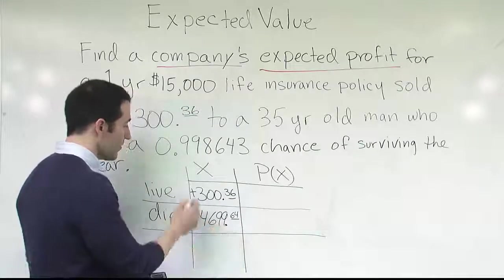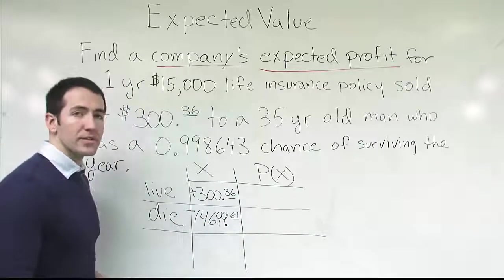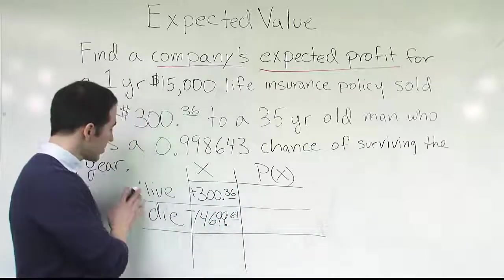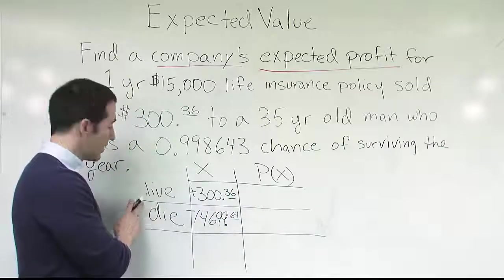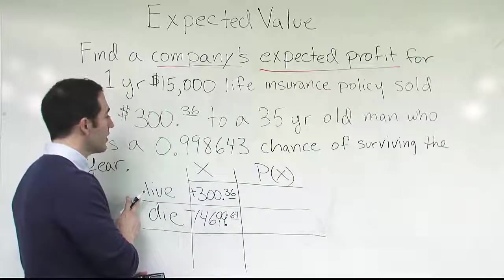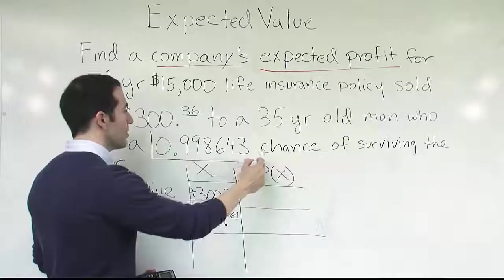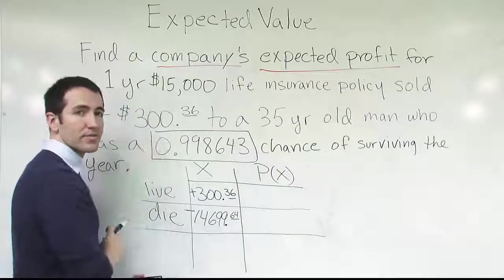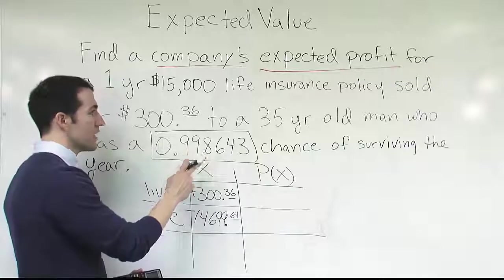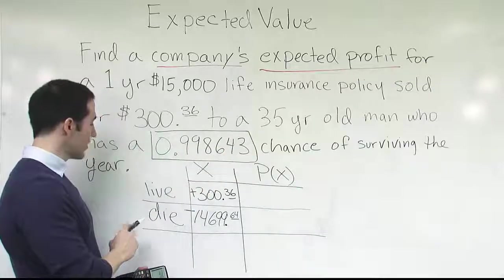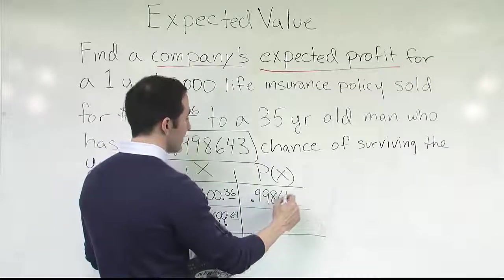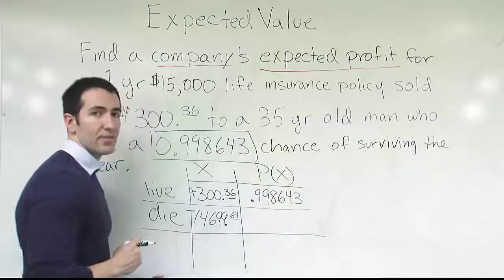We now have the proper dollar amounts listed in the table. Now we're going to plug in the probabilities. Looking back at our controlling events — live and die — what's the probability the person lives the entire year? That always has to be given to you; you can't be expected to know that, that's what the actuaries are for. From the problem, the probability of surviving the year is 0.998643, so we put that into the table.